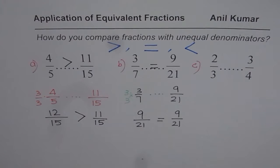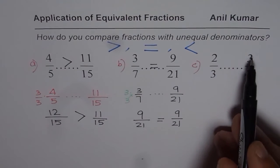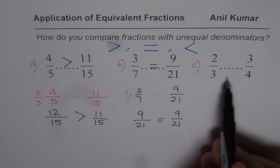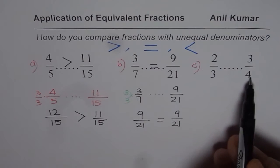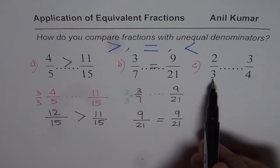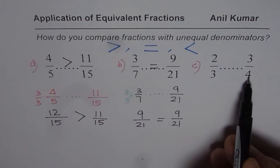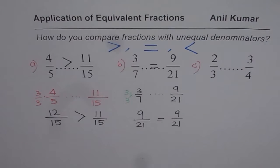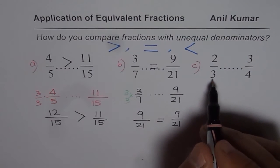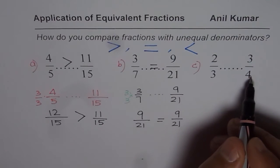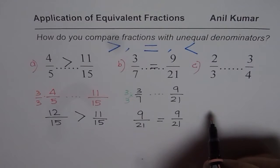The last example is for you to try first, then check with my solution. This time we have 2 over 3 and 3 over 4. What denominator can we use as common? Multiples of 3 are 3, 6, 9, 12. Multiples of 4 are 4, 8, 12. So 12 is the common denominator. If we make both denominators 12, we can compare them directly.